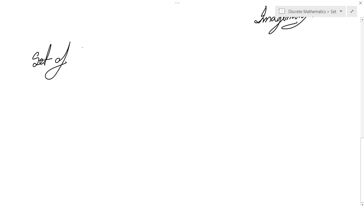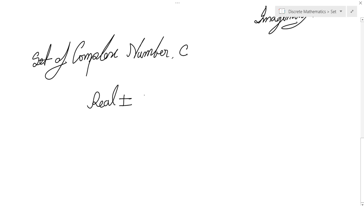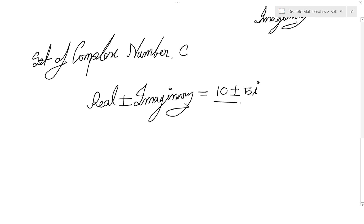After the set of imaginary numbers, we have the set of complex numbers. It is expressed using capital C. A complex number has two parts: real and imaginary. The real part is a real number — for example, 10. The imaginary part is an imaginary number — for example, 5i. A set of complex numbers can be 5 plus 2i, or 1 minus 10i, or 2.6 plus 5.2i, and so on.